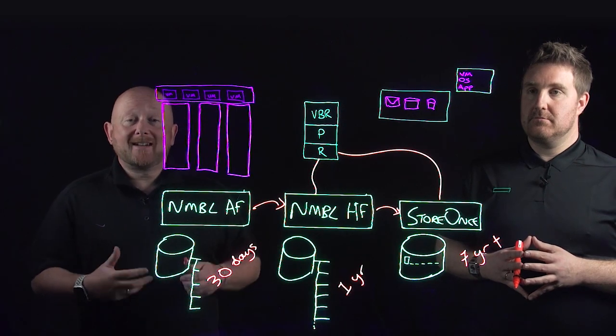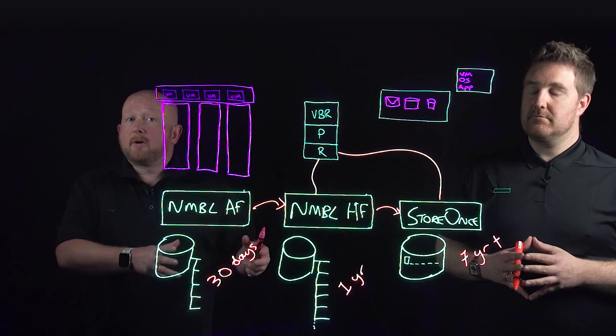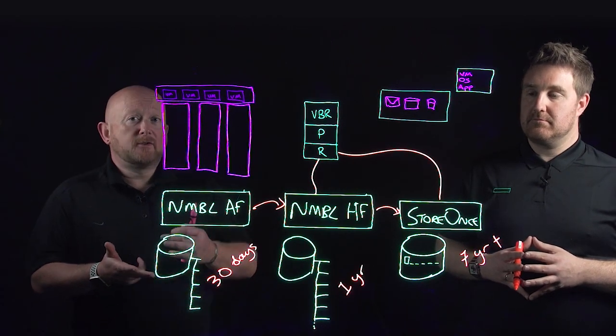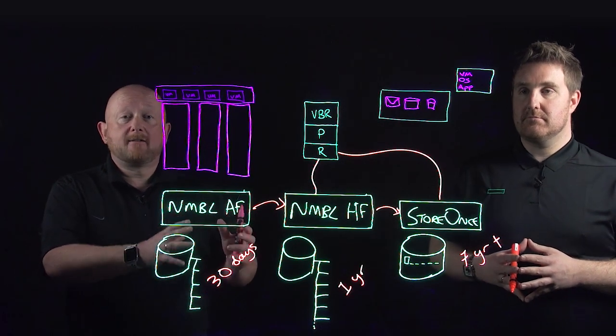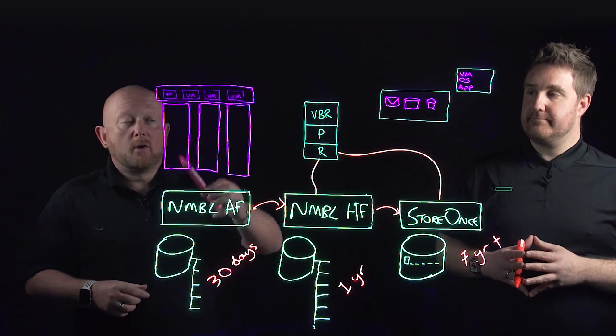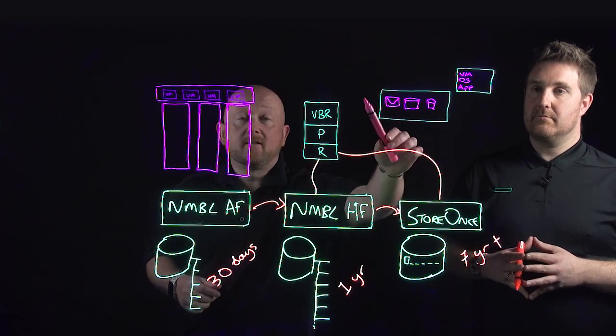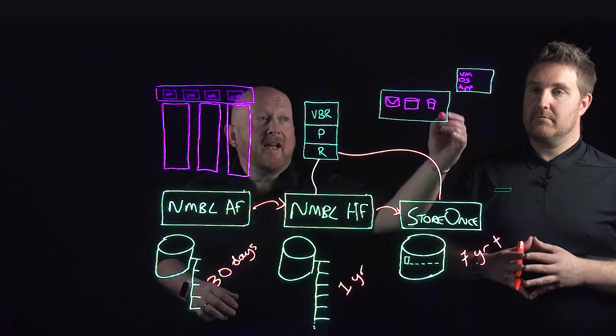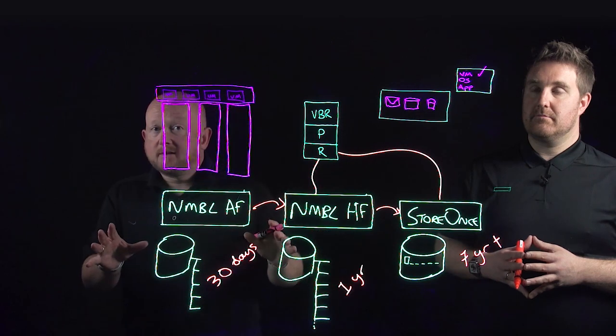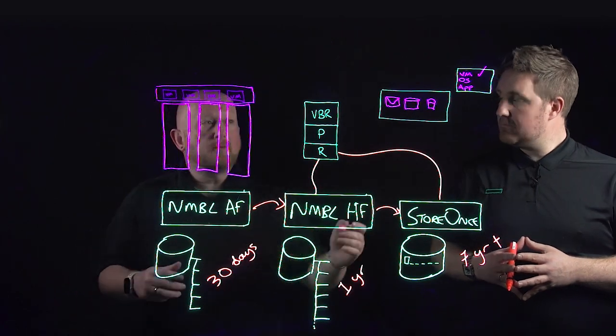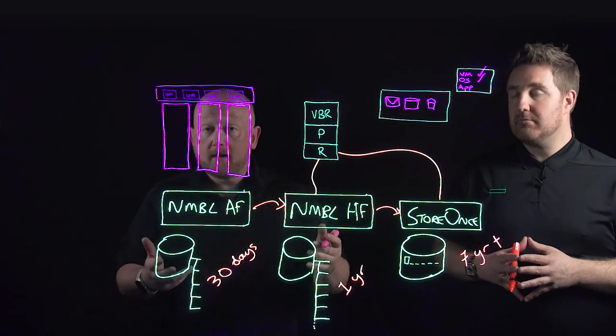The first thing we would do is actually run our SureBackup process. In an earlier video we talked about the 3-2-1-0: three copies of your data, two different media types, one in a different location, the zero being zero errors guaranteed across that. So we would bring and mount the virtual machines, the virtual workloads, into the isolated network. We'd then run verification technology to prove that the virtual machine layer is good, so we'd wait for a heartbeat from tools. We would be able to ping the OS so it would prove that the OS has booted and is functional.